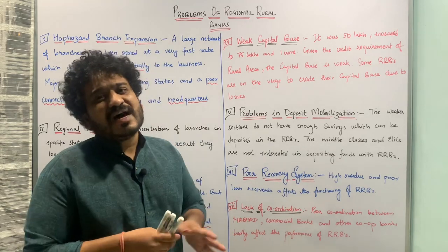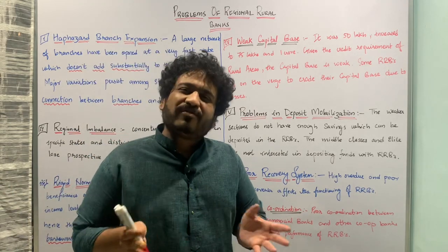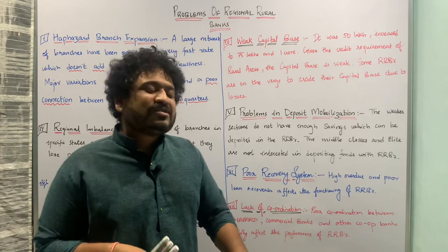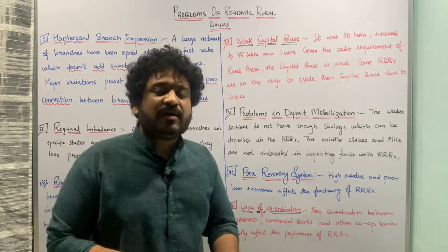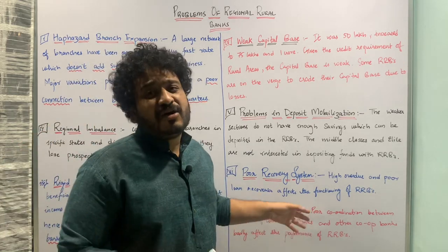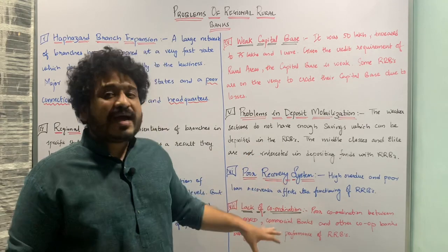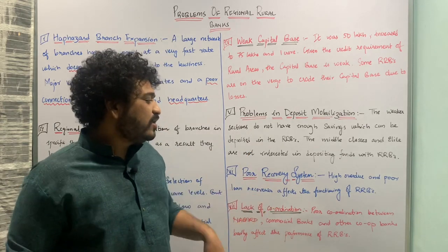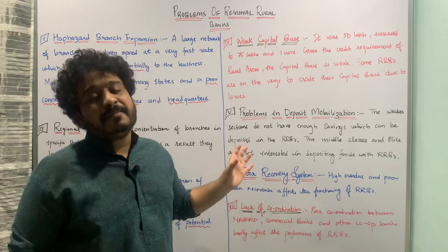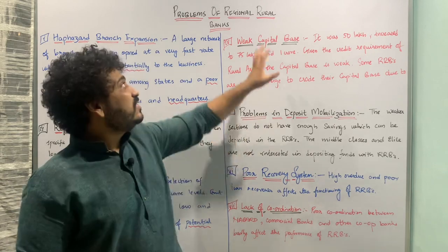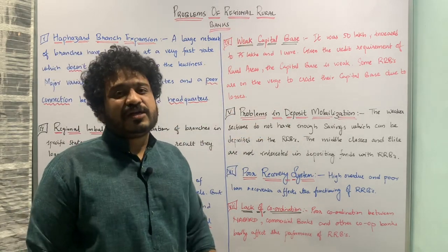Because of the lack of coordination and capital constraints, consumers are moving towards the informal sectors of credit and finance. This is how lack of coordination functions as a problem associated with regional rural banks in the Indian context.